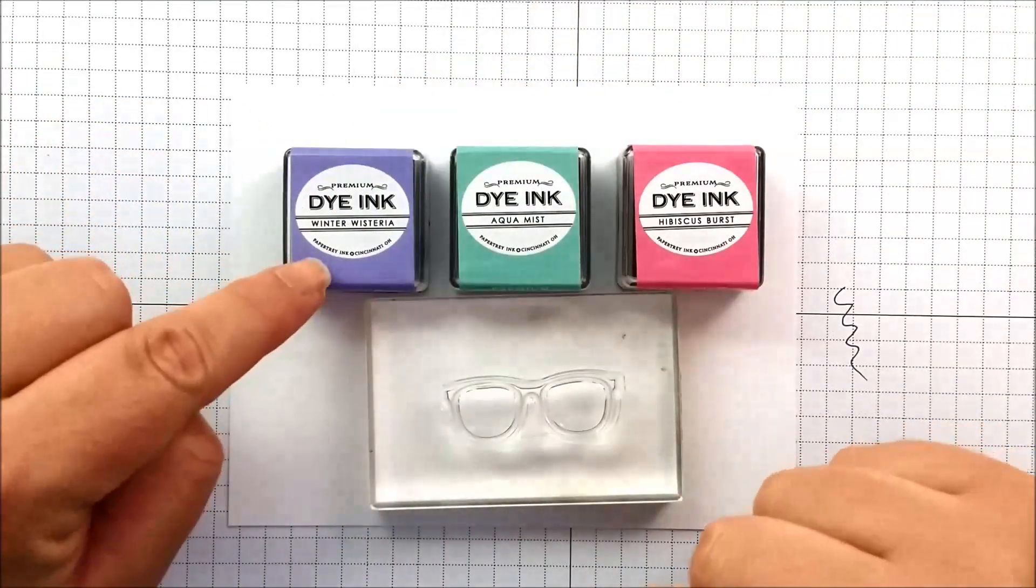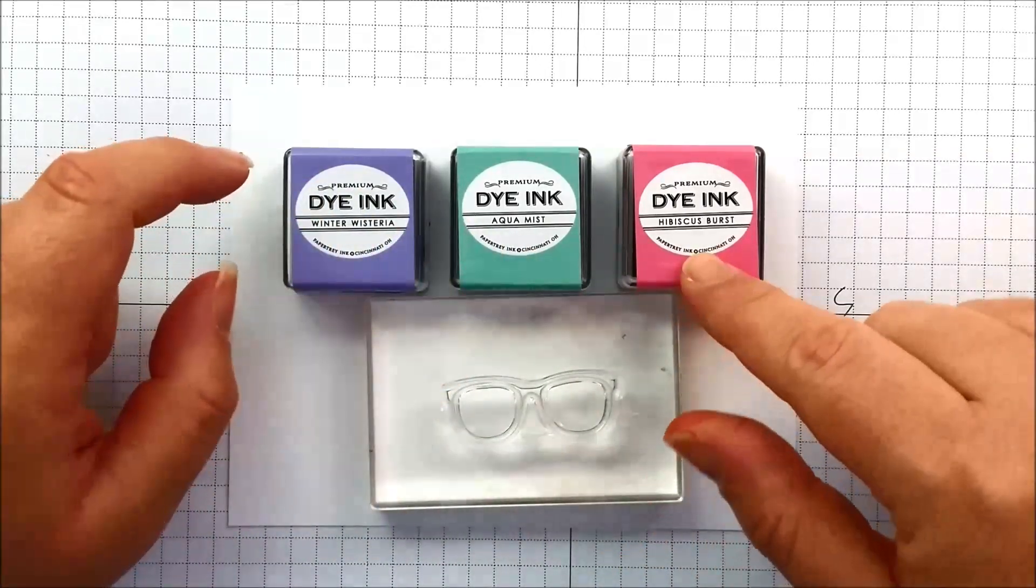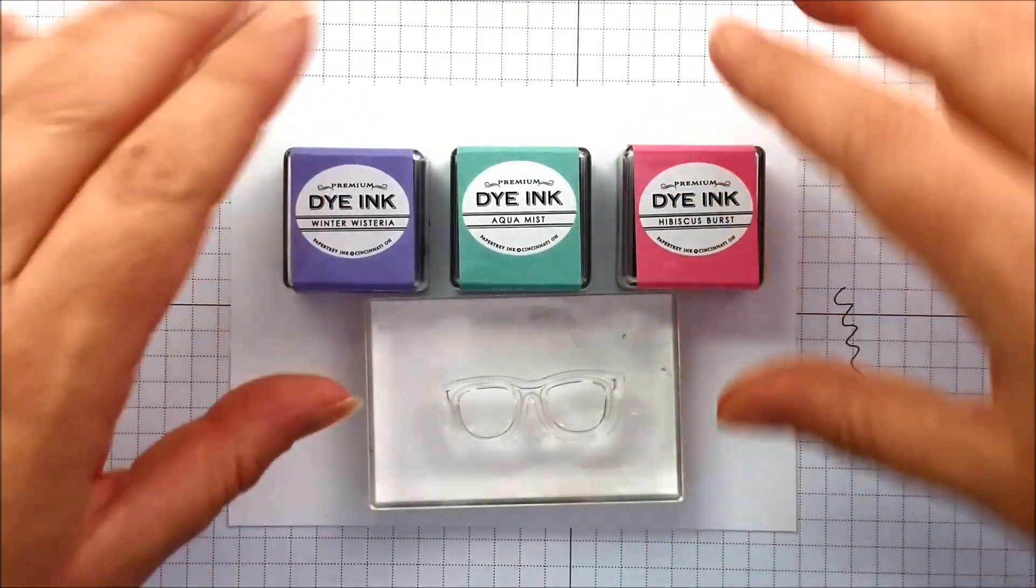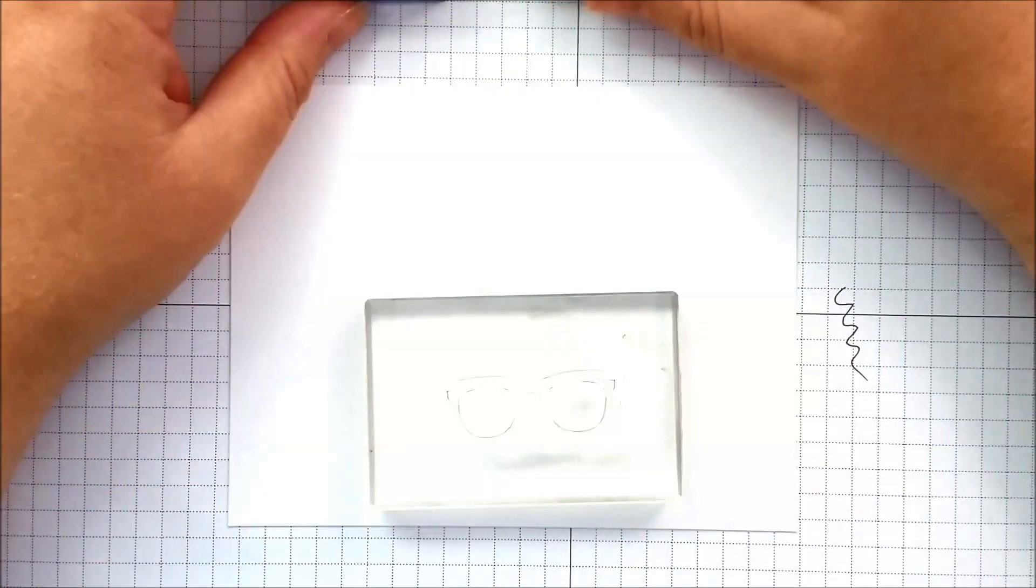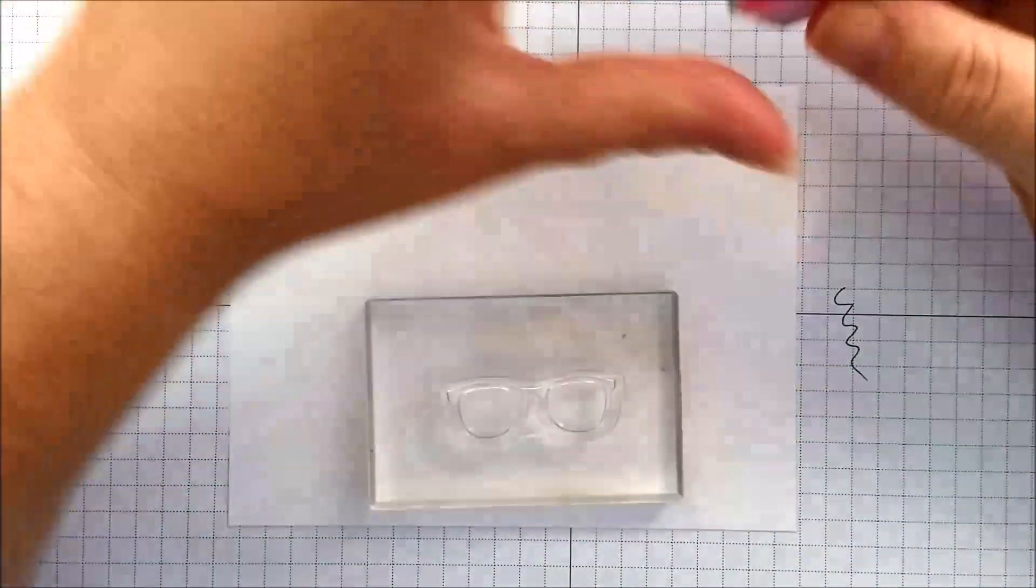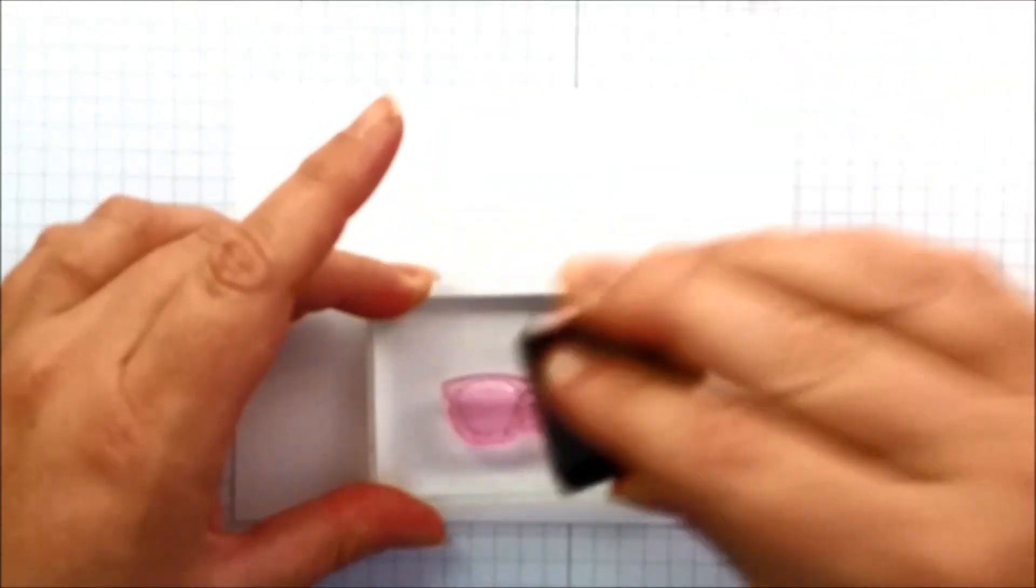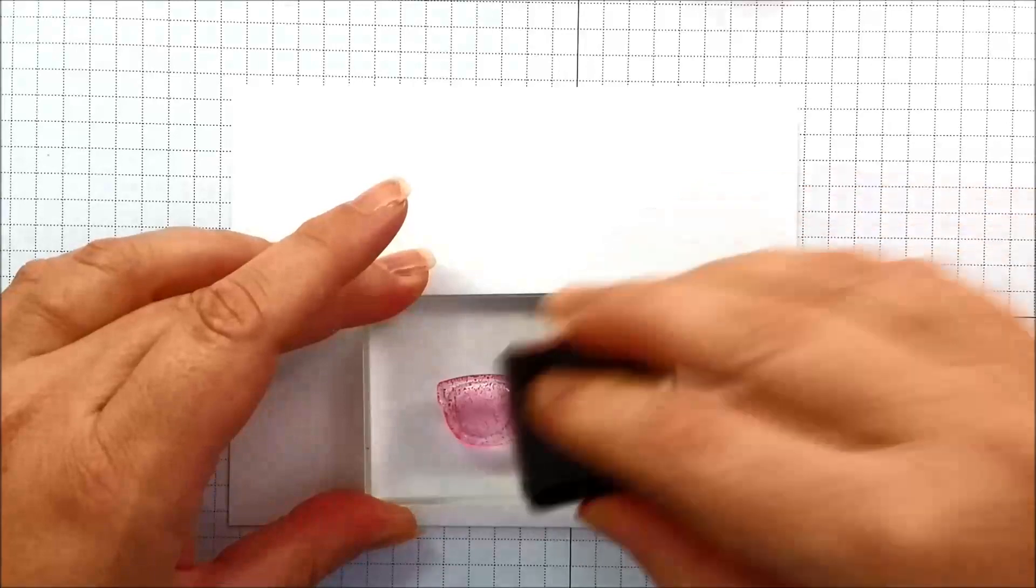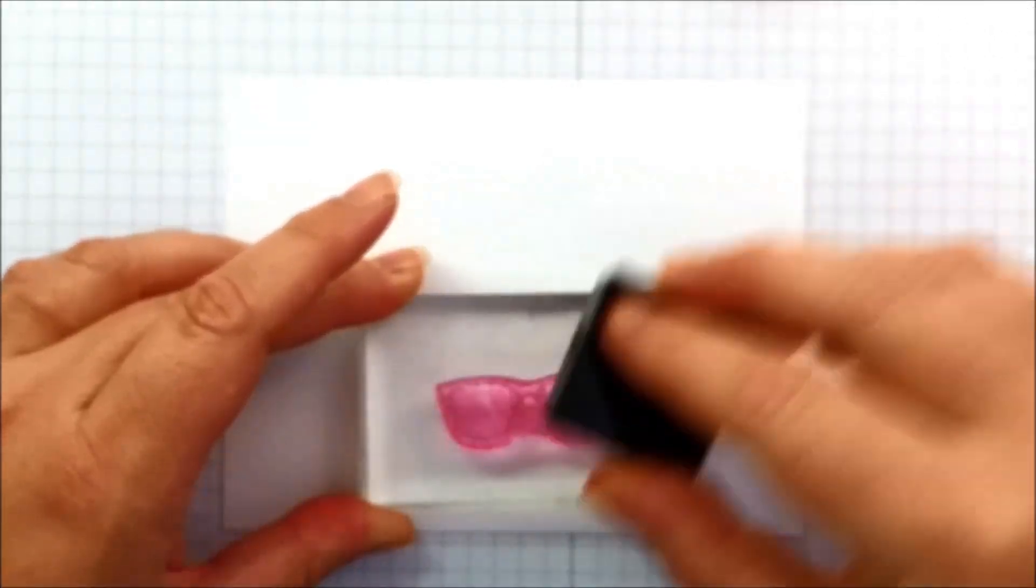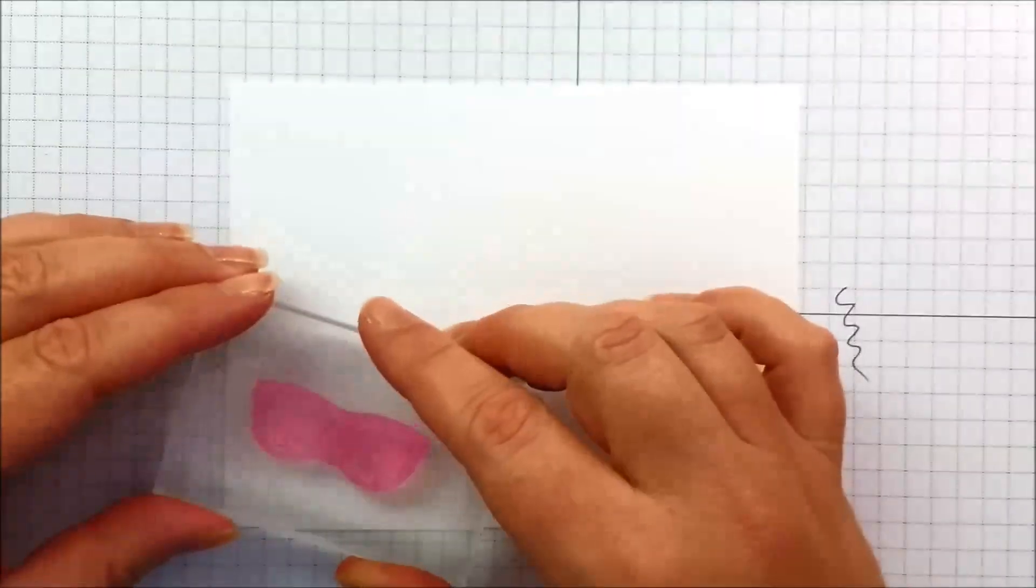Let me show you how you can use this stamp in another way. I've grabbed some dye inks from Paper Trey Ink - we have Winter Wisteria, Aqua Mist and Hibiscus Burst and we're going to use these as a base shape for our little sunglasses. I'm going to start with the pink tone or Hibiscus Burst. It's the same as you would use the stamp the other direction.